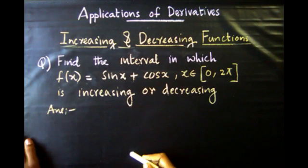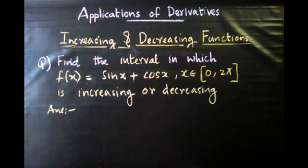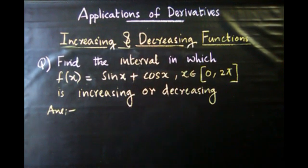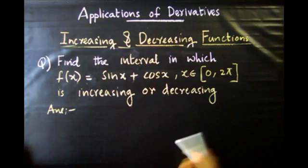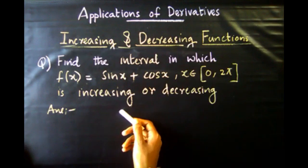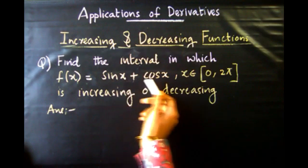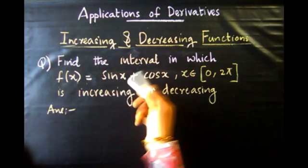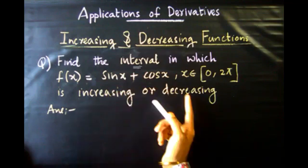The next question is very important. Find the interval in which f(x) = sin x + cos x, where x belongs to the closed interval 0 to pi, is increasing or decreasing. We need to determine whether the function increases or decreases on this interval.